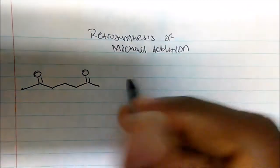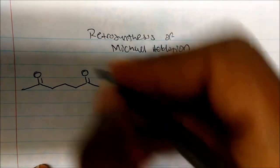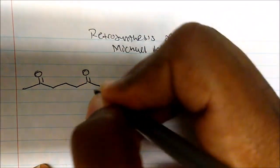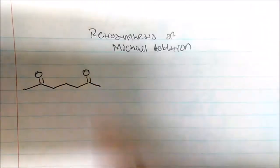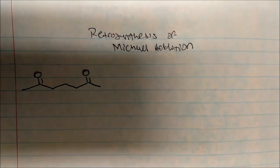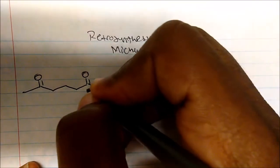We're going to talk about the retrosynthesis of Michael addition. If on an exam you're given a compound to make, the first thing to recognize is that this is a 1,5-dicarbonyl. Anytime the carbonyls are in a 1,5 position, we're thinking about Michael addition — 1, 2, 3, 4, 5.